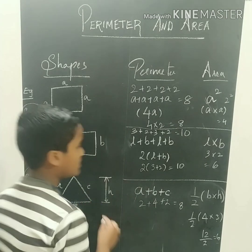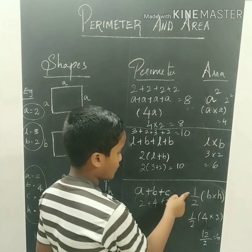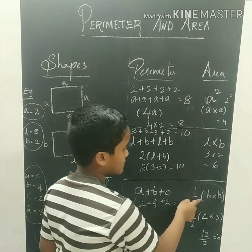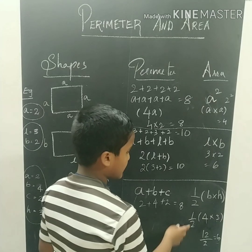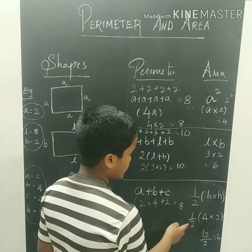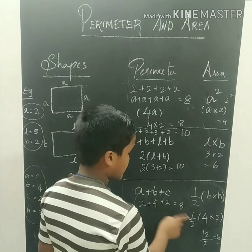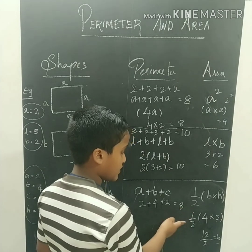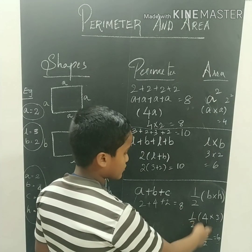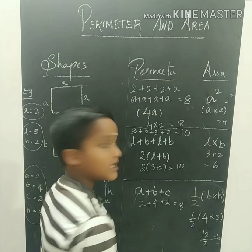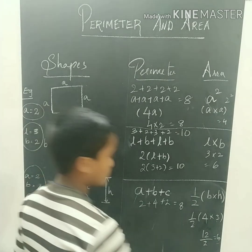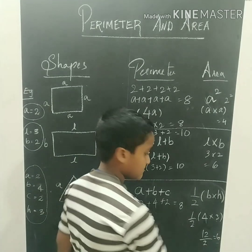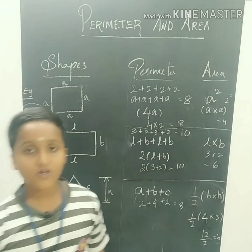For the triangle, the area is one-half into B into H. That is one-half into 4 into 3, and the answer is 6.